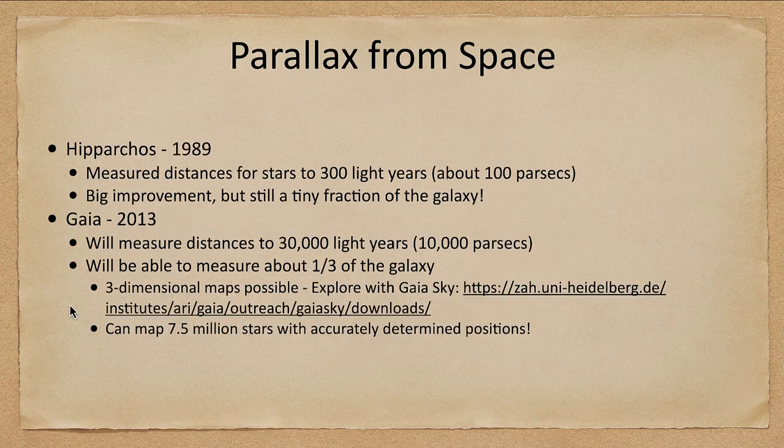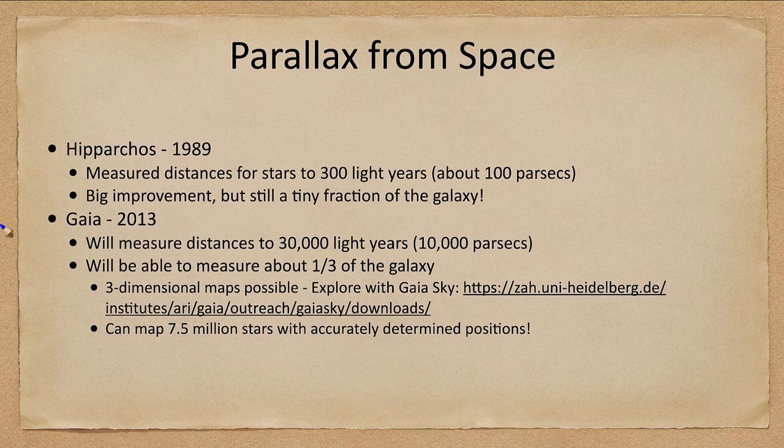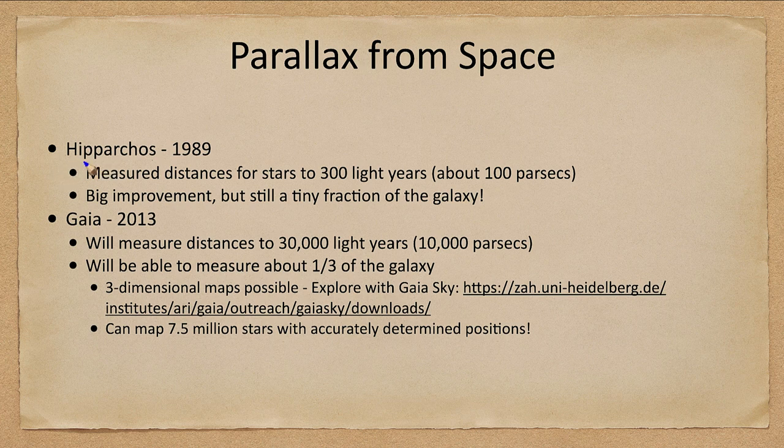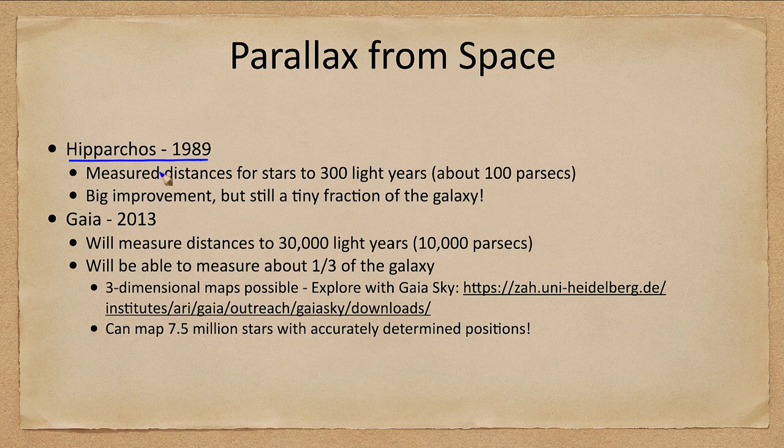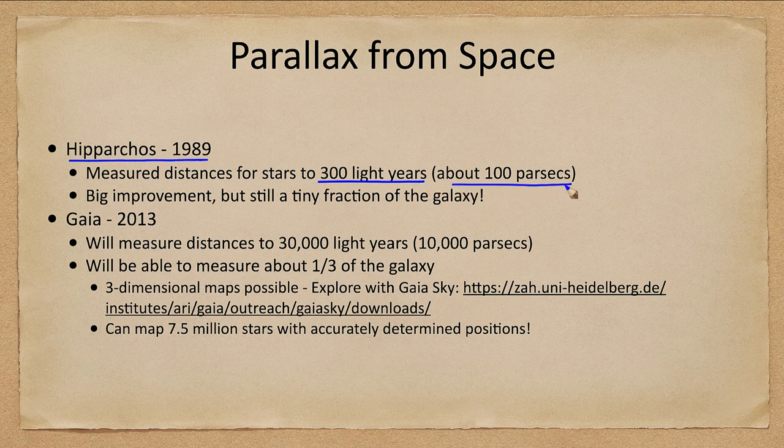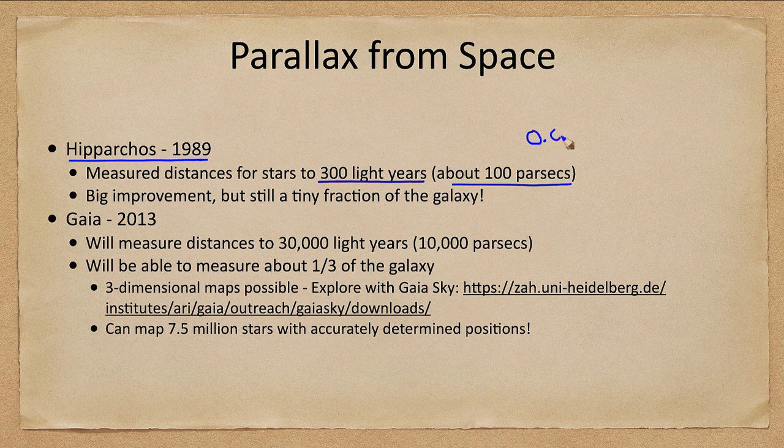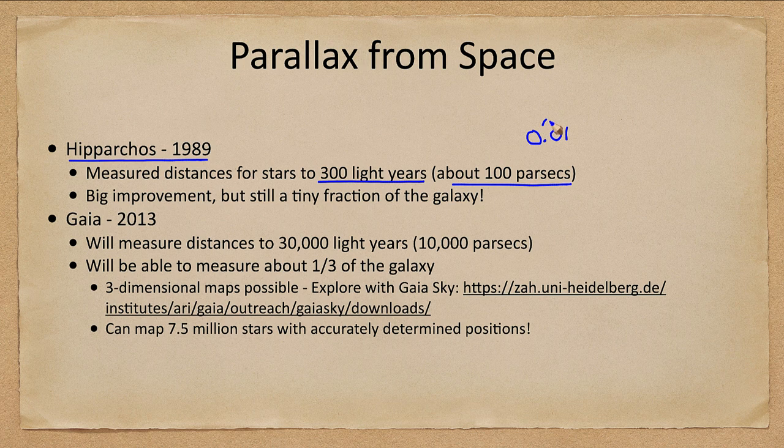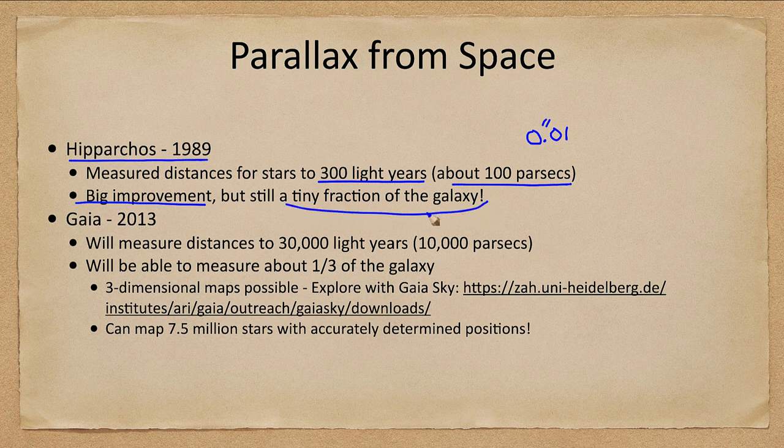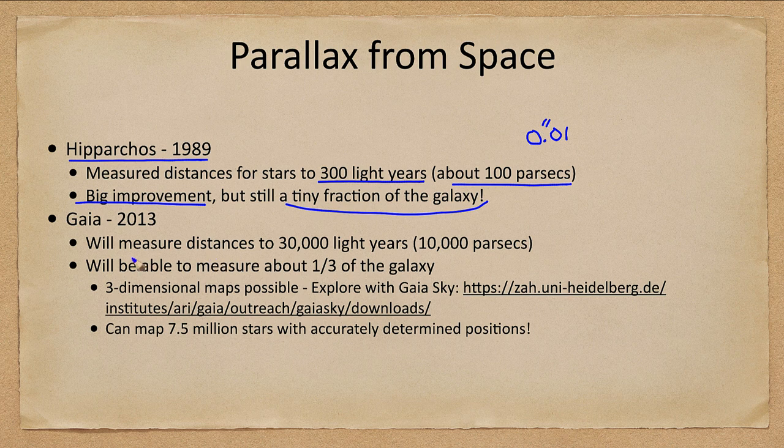Now, how can we measure parallax accurately? Well, some of the problems is that the parallax angle is so tiny and it's difficult to measure. So we've had satellites such as the Hipparcos satellite in 1989, which was working to measure distances of stars out to 300 light years, about 100 parsecs. And that would mean parallax angles of 0.01 arc seconds, one one-hundredth of an arc second. Very small, but a great improvement to what we could do on Earth, but a tiny fraction of our galaxy, which is 100,000 light years across.